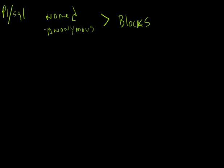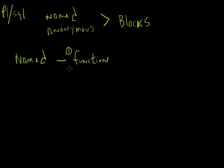In terms of named blocks, there are two main types: one is called a function, and the other is called a procedure.